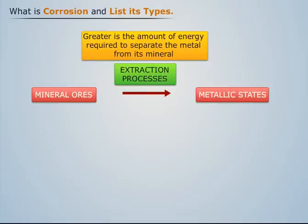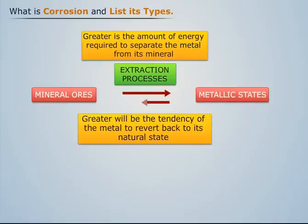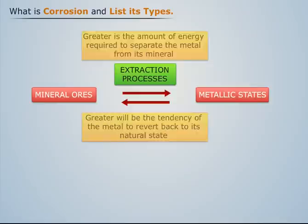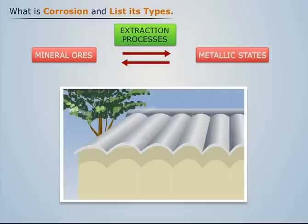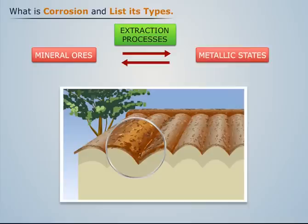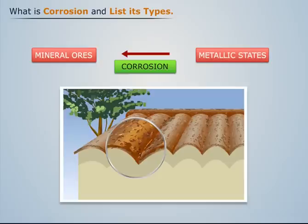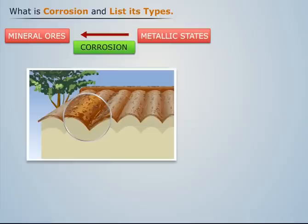The greater the amount of energy required to separate the metal from its mineral ore, the greater will be the tendency of the metal to revert to its natural state, resulting in degradation of the metal. Hence, when metals are exposed to dry gases, moisture, liquids, etc. present in the atmosphere, the exposed metal surfaces begin to decay and return to their natural non-refined state. This transformation of pure metals back into their natural mineral form is called corrosion. The degradation of metal generally starts at the surface and results in consequent loss of metallic material.